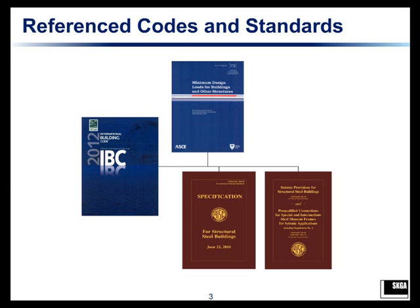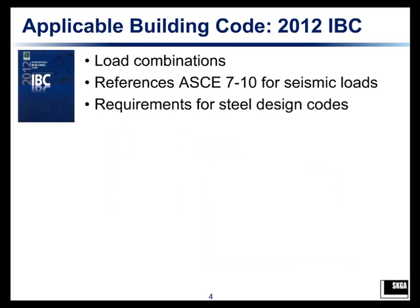We'll also be looking at the AISC specification for structural steel buildings, as well as the seismic provisions — these are the 2010 versions. The 2016 specification has already been released and you can download it from AISC. The seismic provisions should be out in the next few months if they are not already, but they are not included in this discussion.